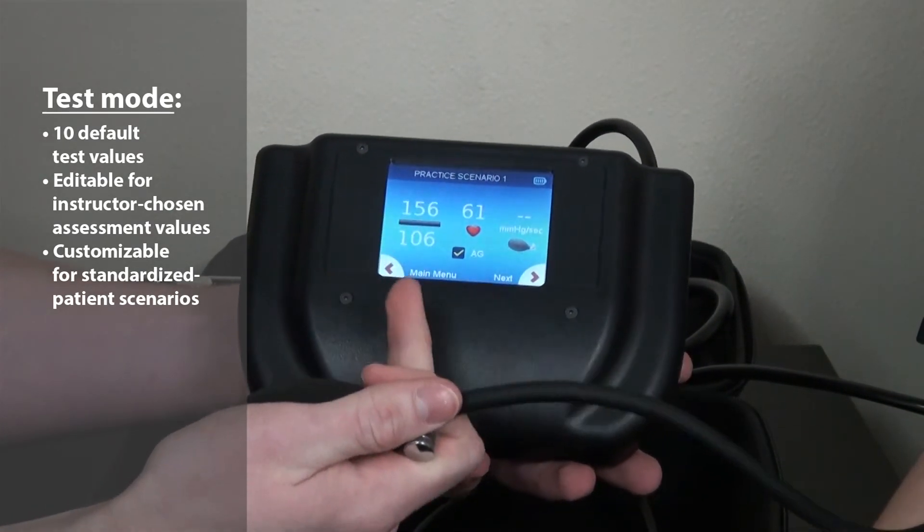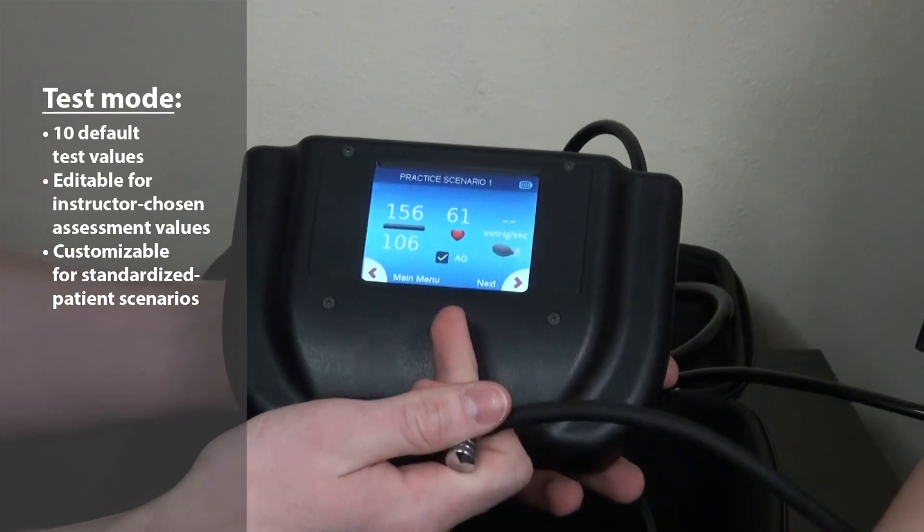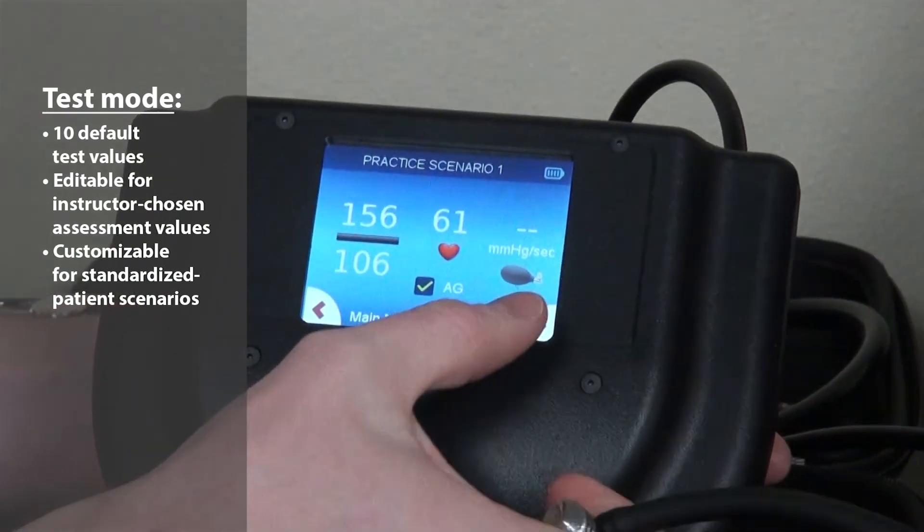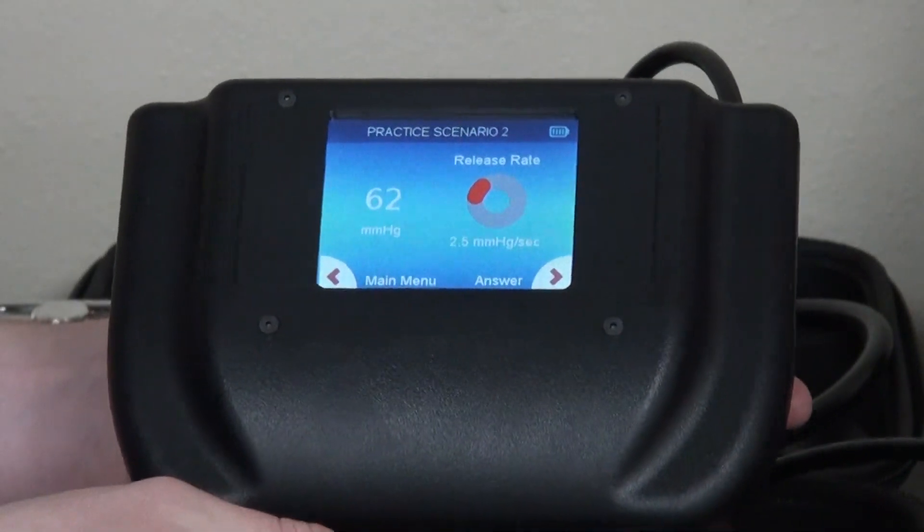The next screen shows your blood pressure answer, heart rate, as well as your average release rate. And then we can go on to the next random sample.